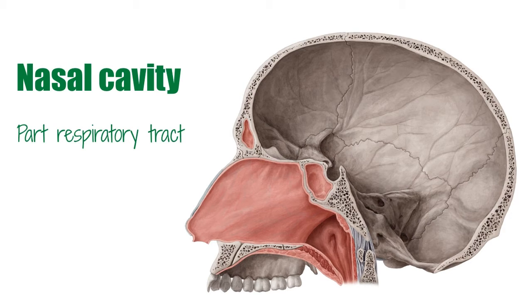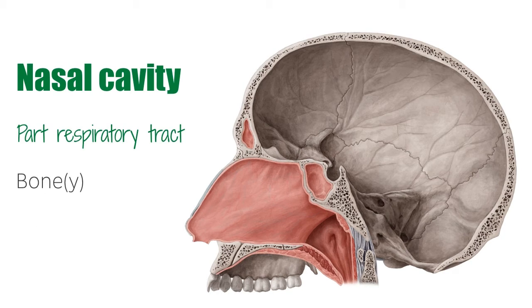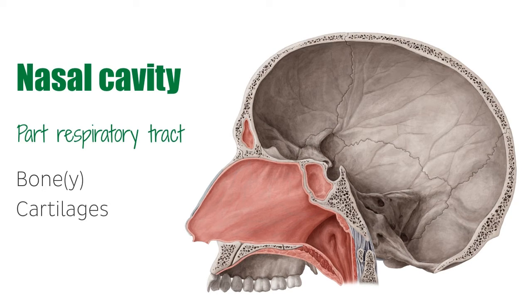In this tutorial, we're going to look at the medial wall of the nasal cavity, particularly looking at the bony structures, the cartilages and the soft tissues. Let's begin with the cartilaginous and osseous structures.